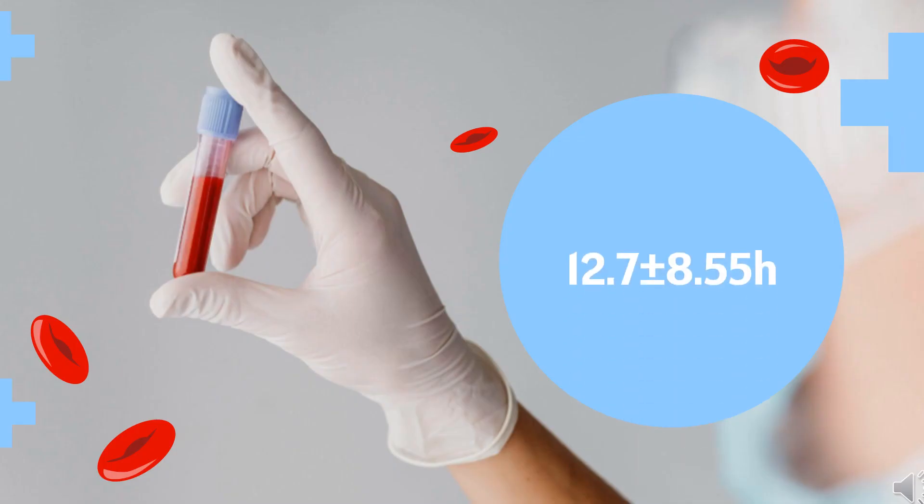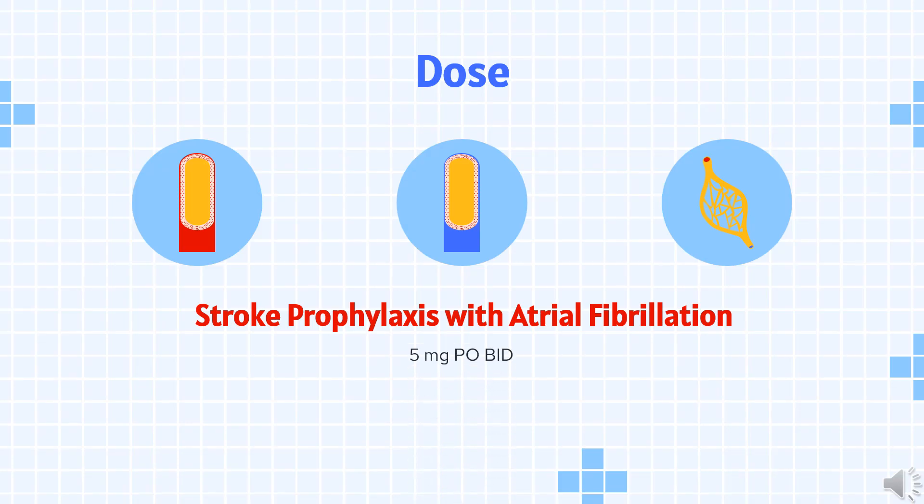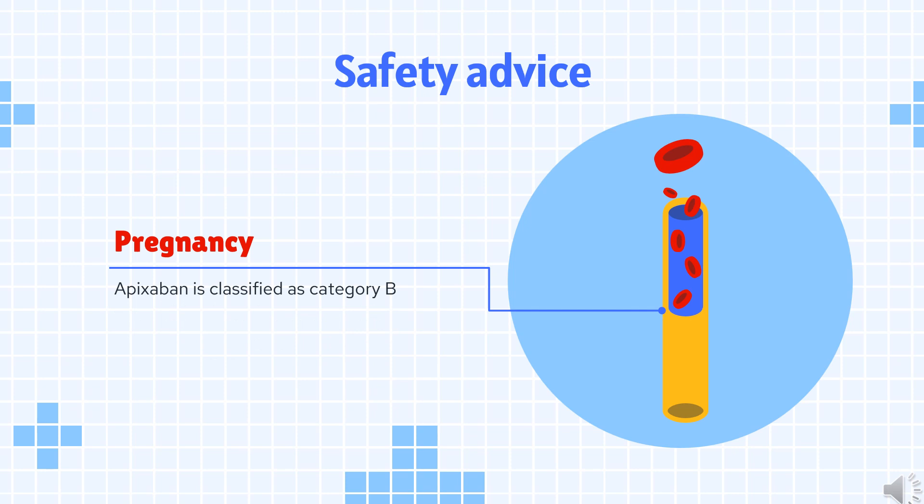Half-life: 12.7 ± 8.55 hours. Dose: For stroke prophylaxis with atrial fibrillation — 5 mg PO BID. For postoperative prophylaxis of DVT/PE following hip or knee replacement — initial dose 2.5 mg PO 12–24 hours after surgery; hip replacement: 2.5 mg PO BID for 35 days; knee replacement: 2.5 mg PO BID for 12 days. For DVT or PE treatment: 10 mg PO BID for 7 days, then 5 mg BID.